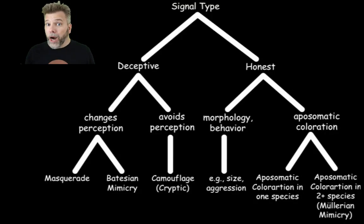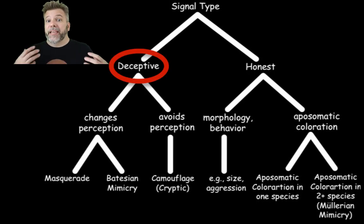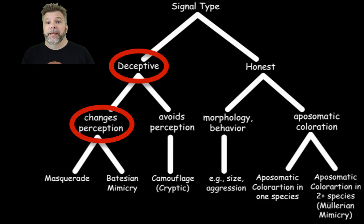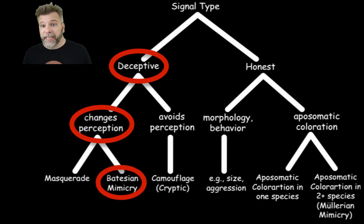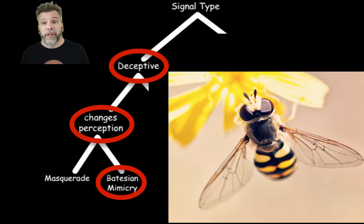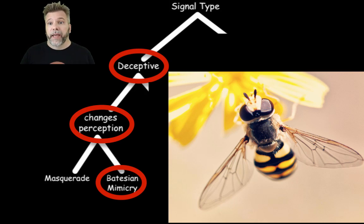The roar — I was trying to be a tiger, a deadly tiger, but I'm not really a tiger. It's a deceptive signal where I'm trying to change your perception and make you think I'm dangerous. This is called Batesian mimicry — when a non-dangerous thing mimics a dangerous thing. A great natural example is a hoverfly mimicking a bee or yellow jacket with bright yellow and black coloration, making you think it's dangerous — when in actuality it's just a fly.